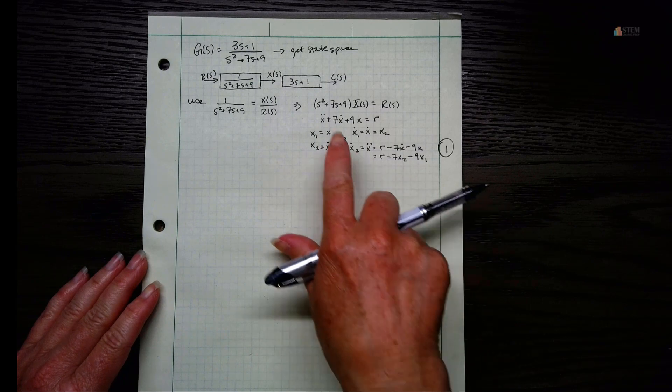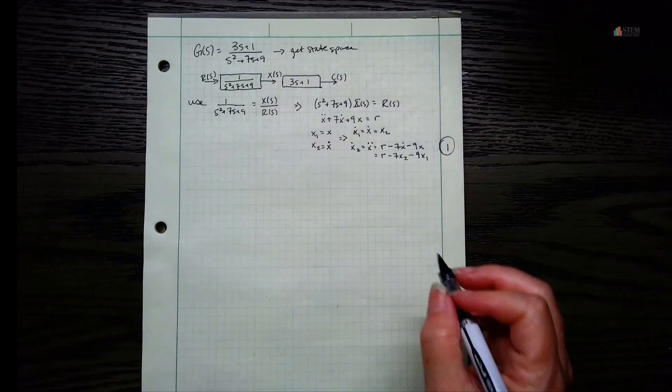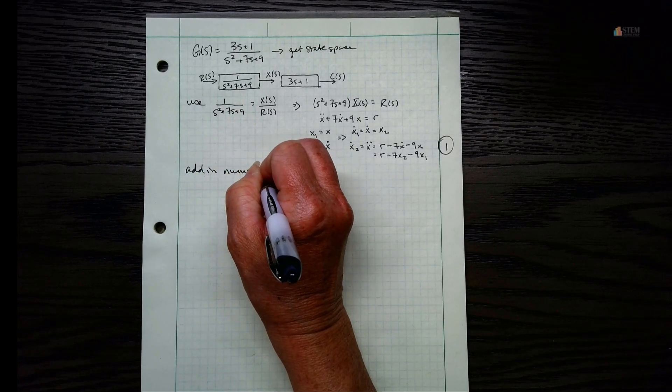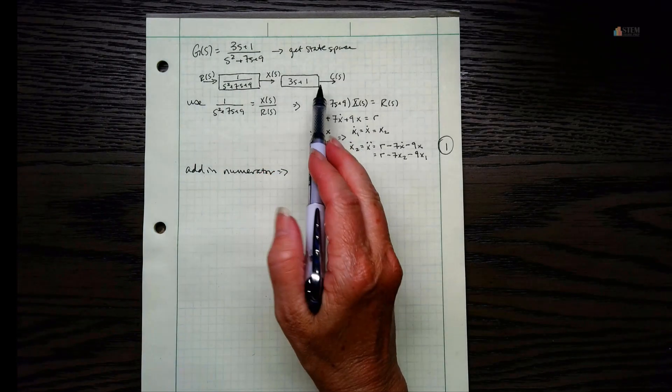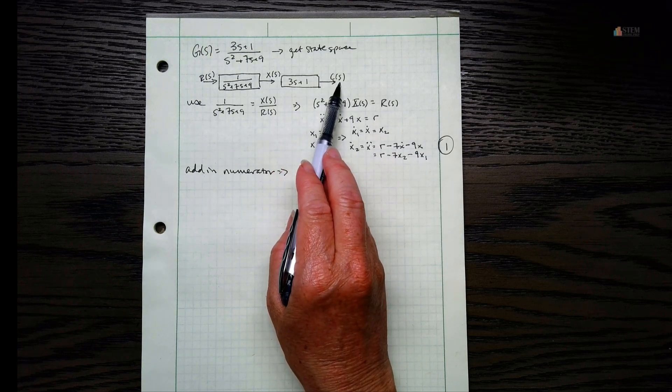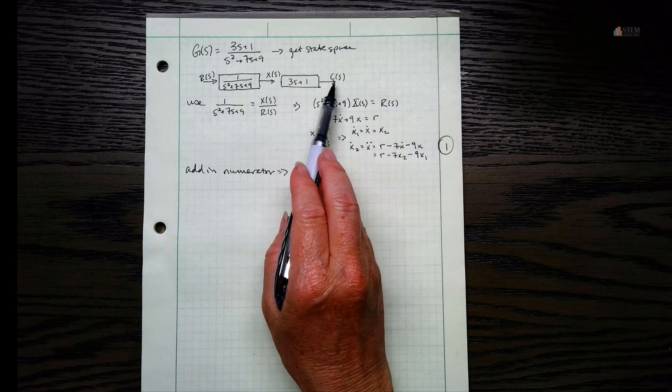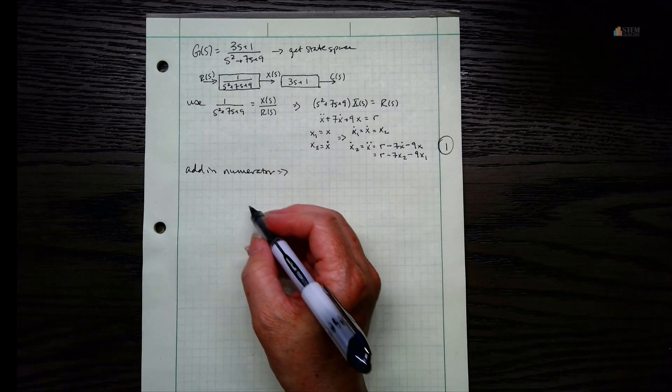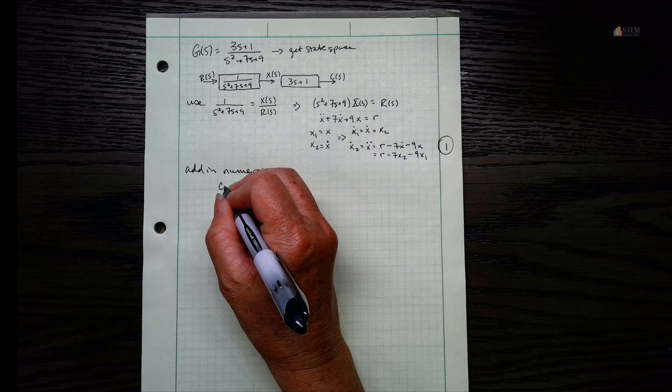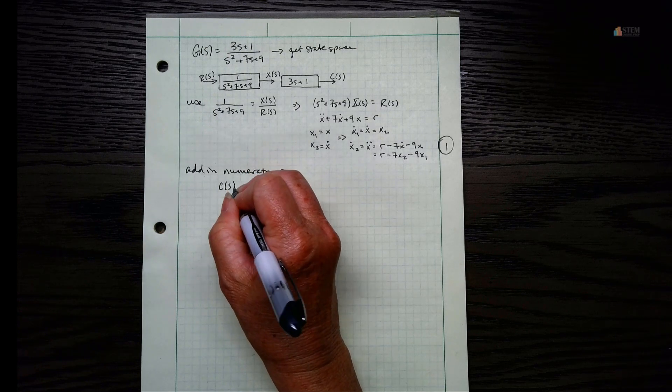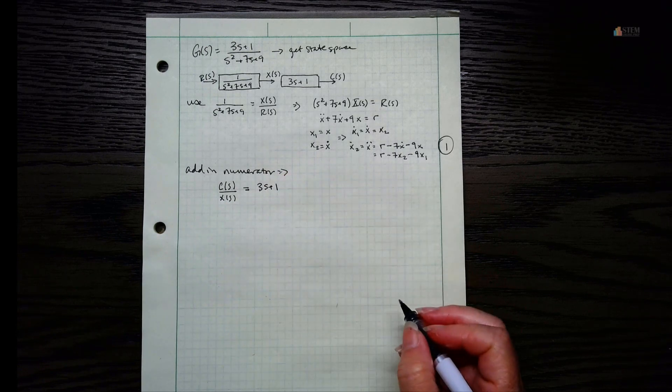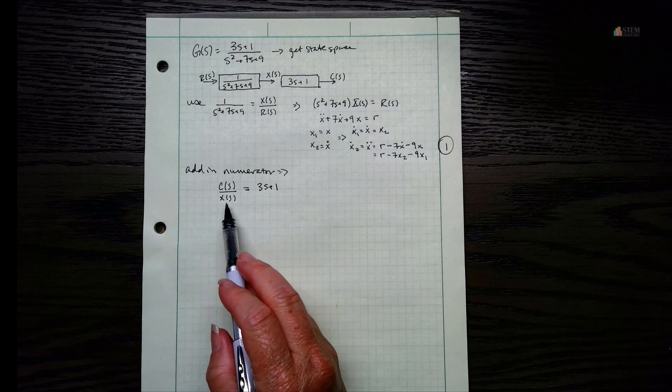Now that we've got this done, I need to worry about this part. So now let's add in the effect of the numerator. Let's see what we've got here. The input into this block is X of S, output is C of S. So just like we did here, you can basically write it out. So it's output over input for the block. That means we can write out that we've got C of S over X of S is going to be 3S plus 1 - output over input, just like we always have for a transfer function.